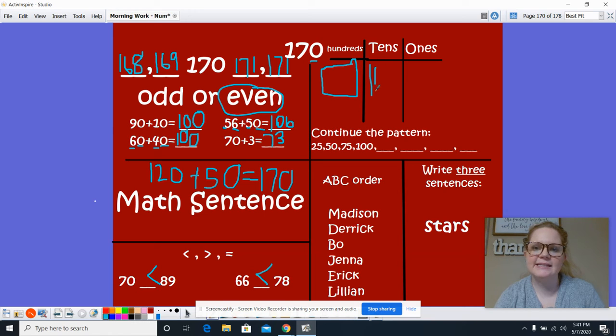All right, let's take a look at our pattern: 25, 50, 75, 100. We've had a pattern similar to this before. It's counting like you're counting quarters. So after 100 would come 125, then 150, then 175, and then 200.